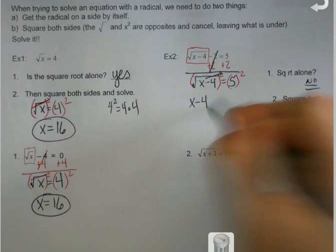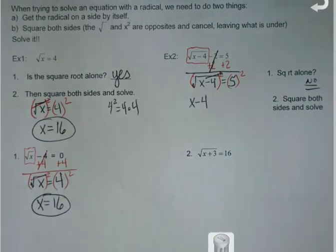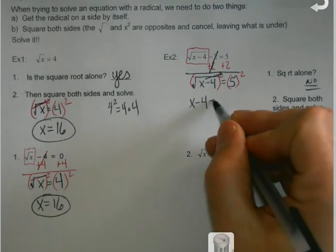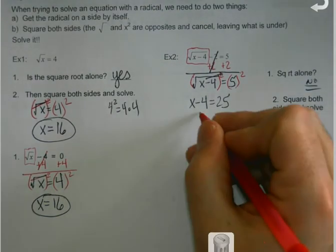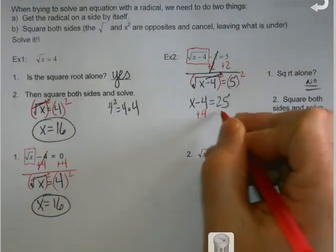So I'll have the x minus 4 left underneath, because again, the squared and the squared just cancel. I'm not squaring the stuff underneath. And then 5 squared is 25, and we get to the part that you guys are real good at, which is solving the equation that's left.